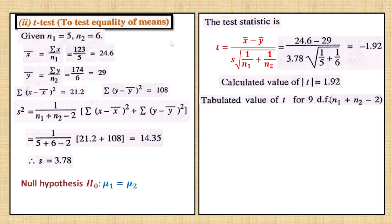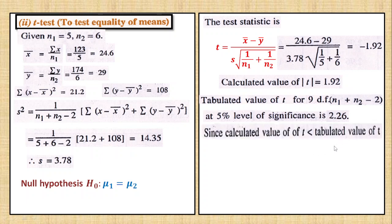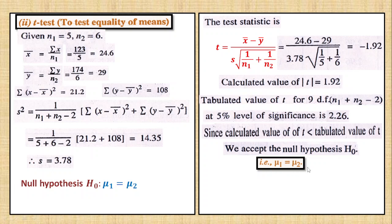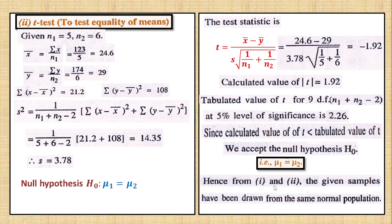The table value degrees of freedom is n1 plus n2 minus 2. The first sample plus second sample sizes give degrees of freedom of 9. From the t-table, since the calculated t value is less than the table value, the means are equal. Therefore, from both the F-test and T-test, the given samples have been drawn from the same normal population.